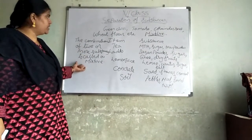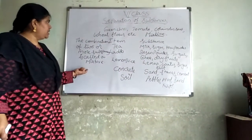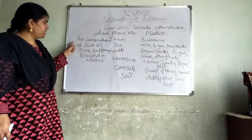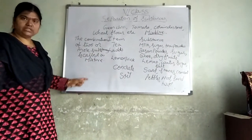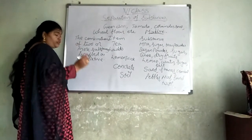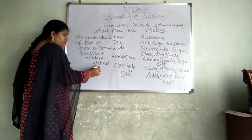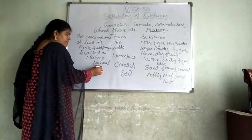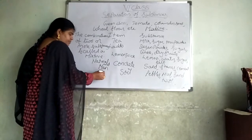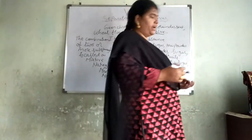I gave you these examples just to explain what a mixture is. The combination of two or more substances is called a mixture. We are getting this mixture in two forms: one is natural, and the other one is manmade. Some are natural substances and some are manmade substances.